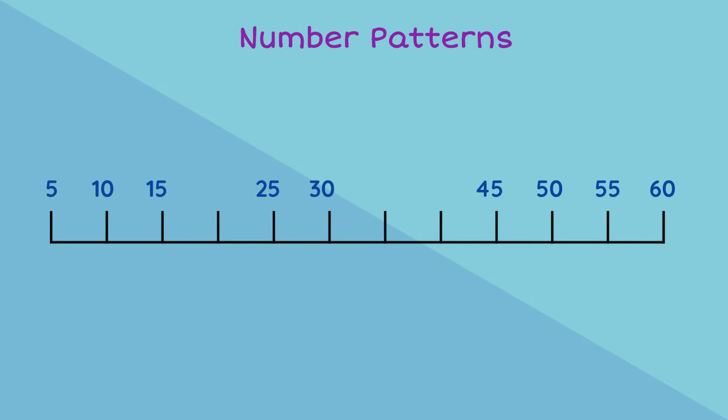Correct! We add 5. So our missing numbers on the number line would be 20, then 35, then 40.